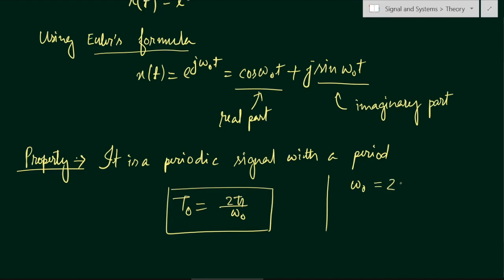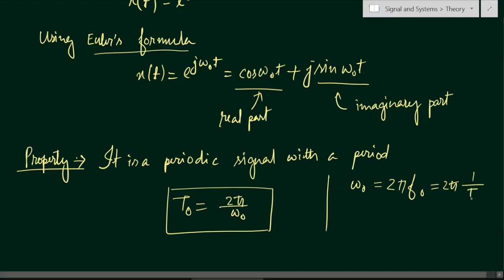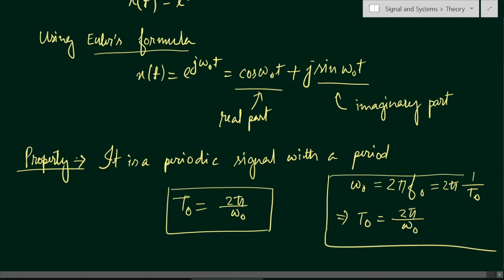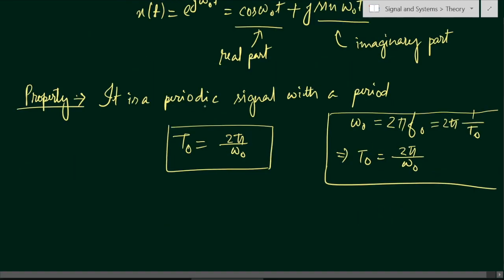We know that the angular frequency ω₀ = 2πf₀ = 2π/T₀. From this, we can derive that T₀ = 2π/ω₀. So the complex exponential signal is a periodic signal with period 2π/ω₀.